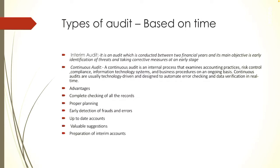The next type based on time is continuous audit. A continuous audit is an internal process that examines accounting practices, risk control, compliance, information technology systems, and business procedures on an ongoing basis. Continuous audits are usually technology driven and designed to automate error checking and data verification in real time.